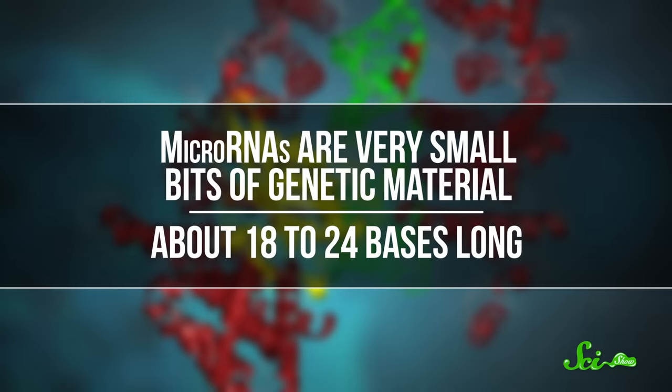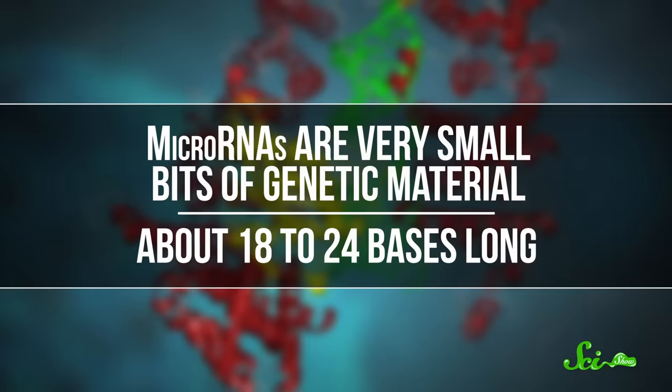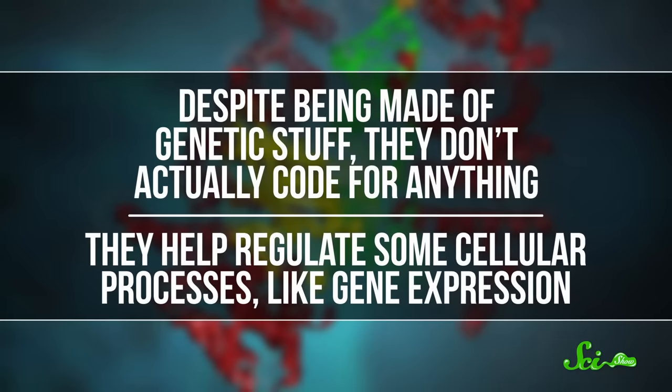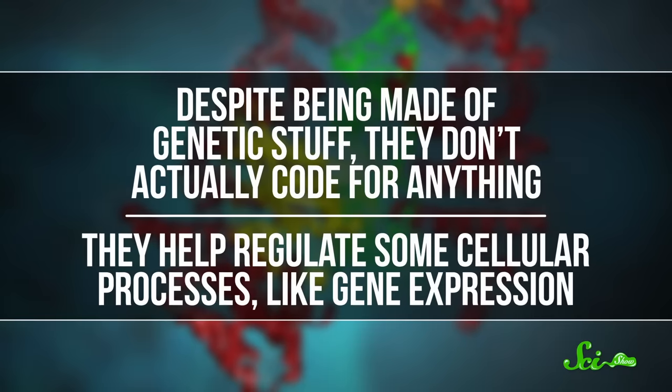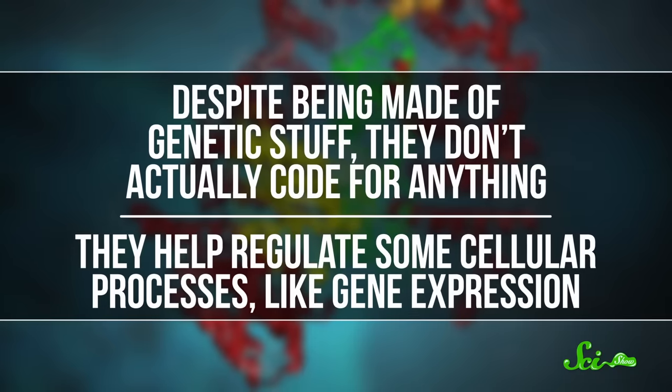MicroRNAs are very small bits of genetic material, maybe only about 18 to 24 bases long. Despite being made of genetic stuff, they don't actually code for anything. Instead, they help regulate some cellular processes, like gene expression. And they're found in all kinds of living organisms, so they could be used to tell whether a particular stain came from a person or from something that wasn't a person.